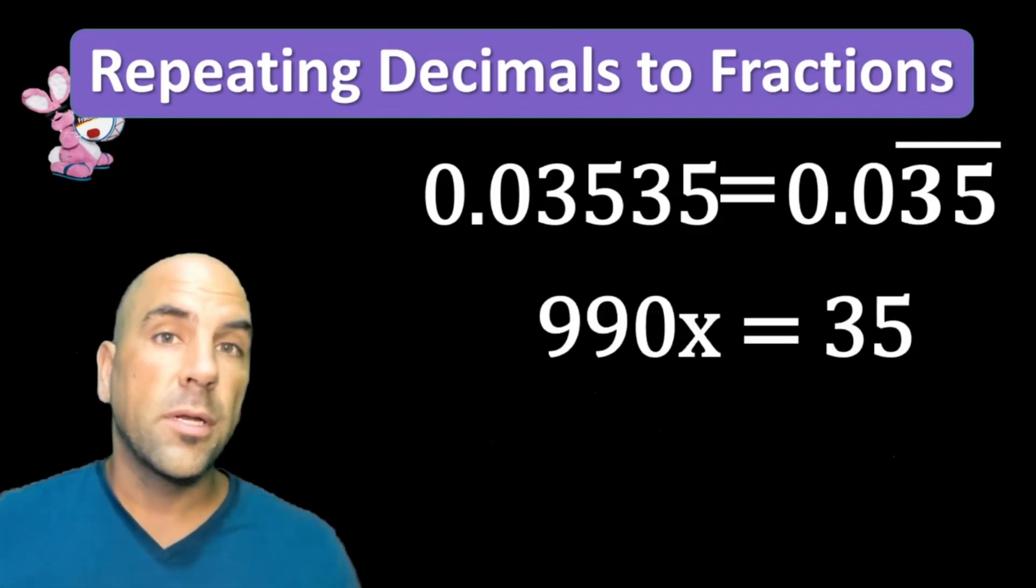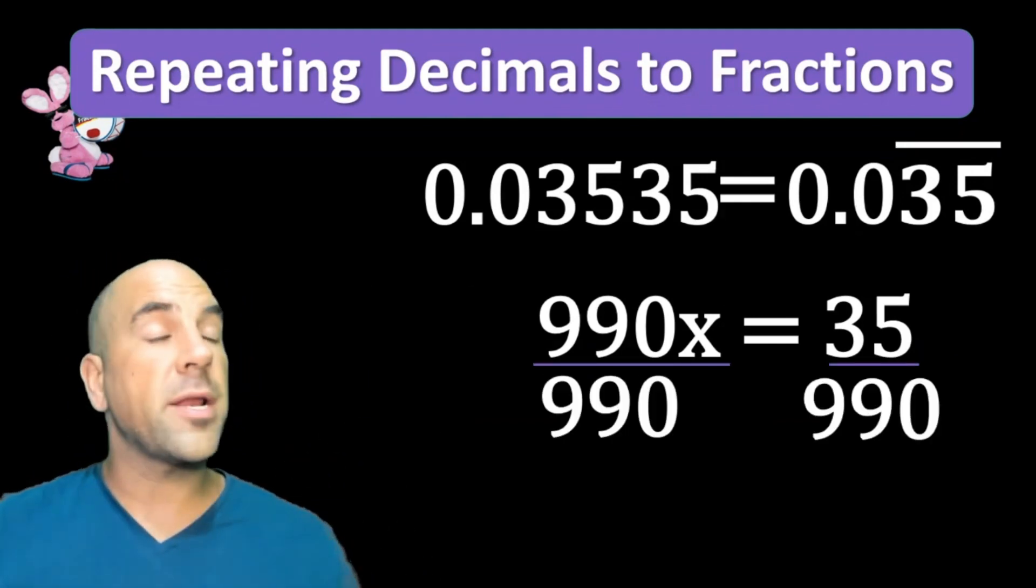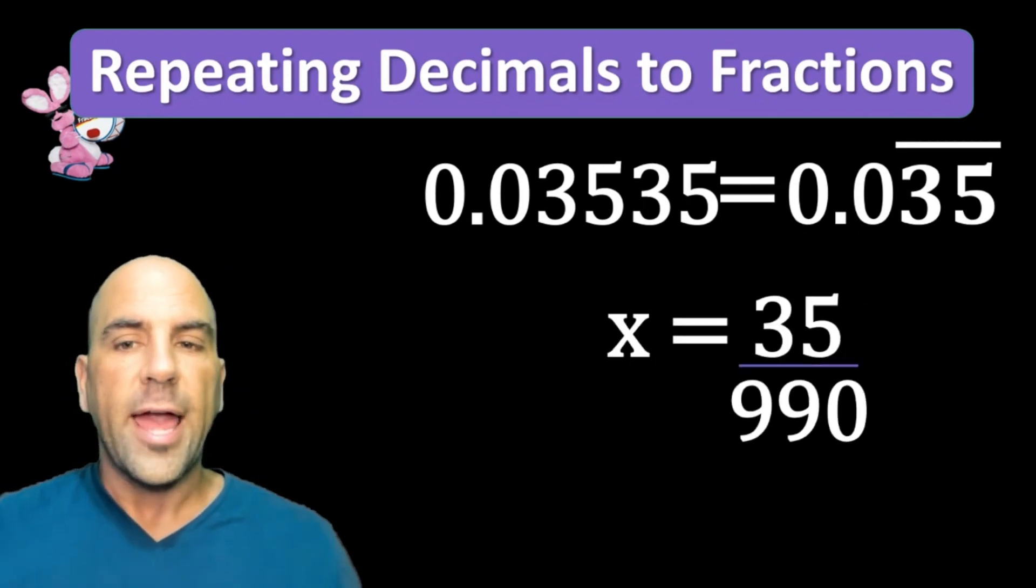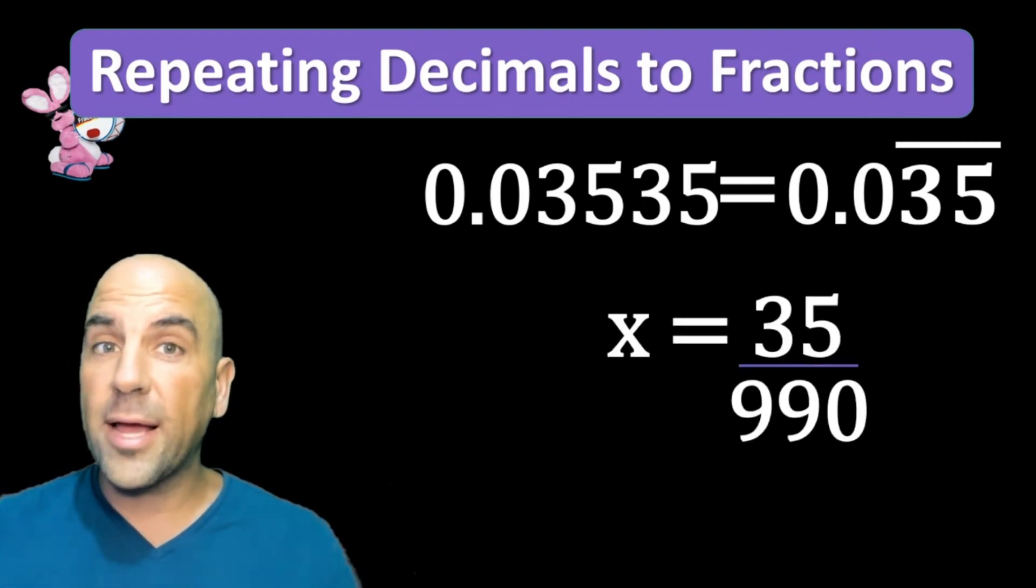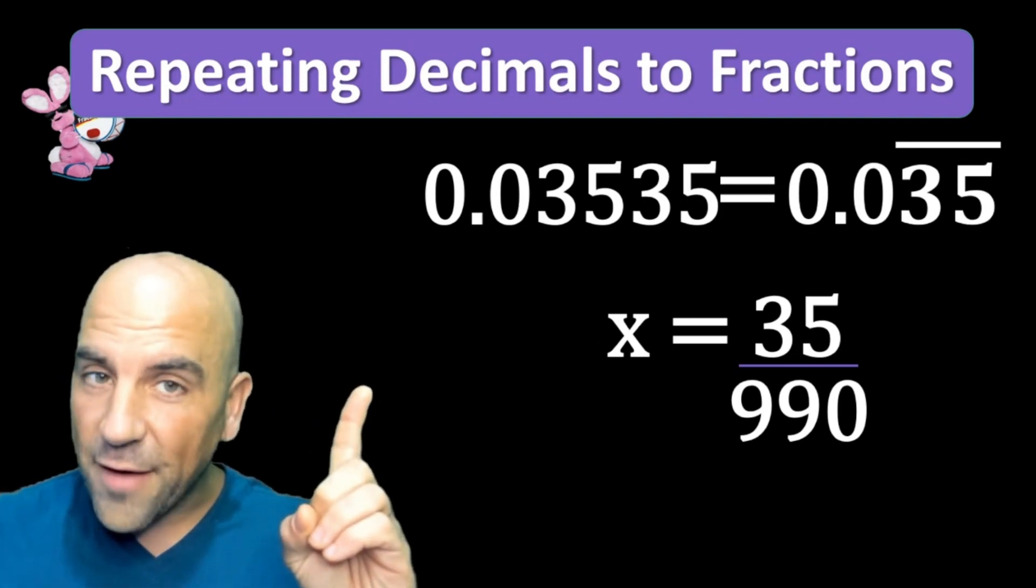Let's divide both sides by 990 to get x by itself, and we have 35/990. But we're not done yet because these share a common factor—their greatest common factor.